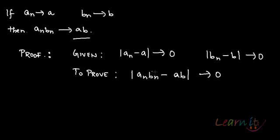What is given to us? That |a_n - a| tends towards 0 and |b_n - b| tends towards 0. And what do we have to prove? We have to prove that a_n·b_n tends towards a·b, which is equivalent to proving that |a_n·b_n - a·b| tends towards 0.